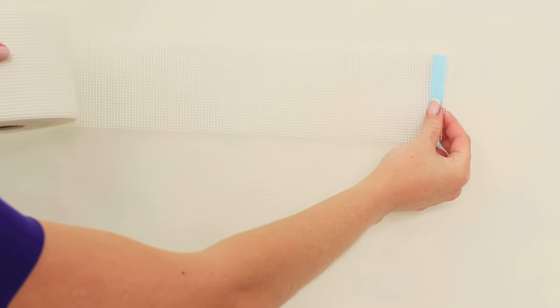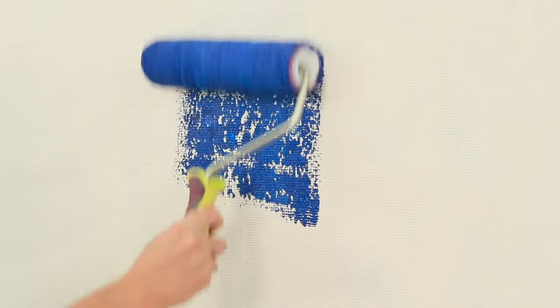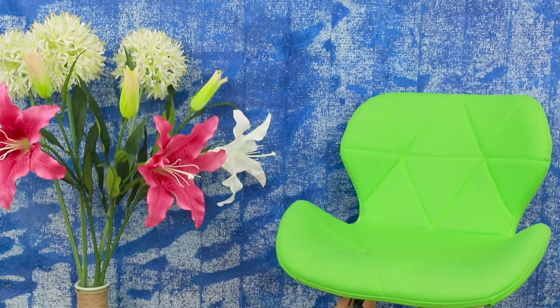And now glue a net to the wall. Paint it any color you like and remove the net. You get cute cells on the wall! They are back in fashion again! A waffle wall is stylish, textured, and very beautiful! How do you like this idea?